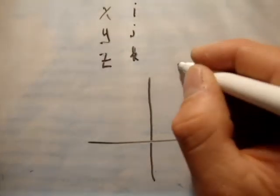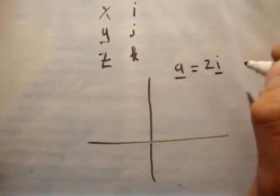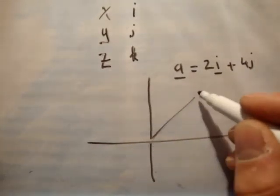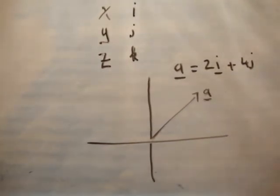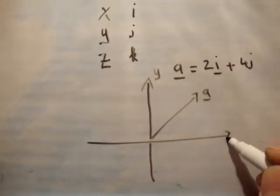But, however, what if I said a was equal to 2i plus 4j? Say that vector was here, like that. That's the vector a. Well, then what axis does that live in?